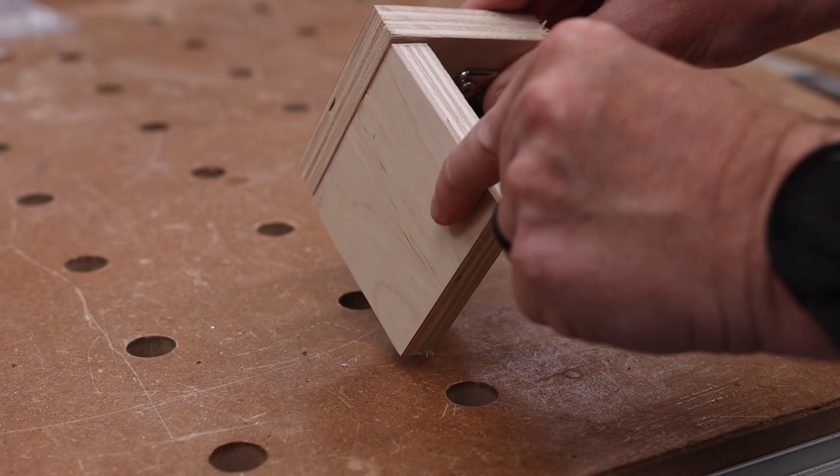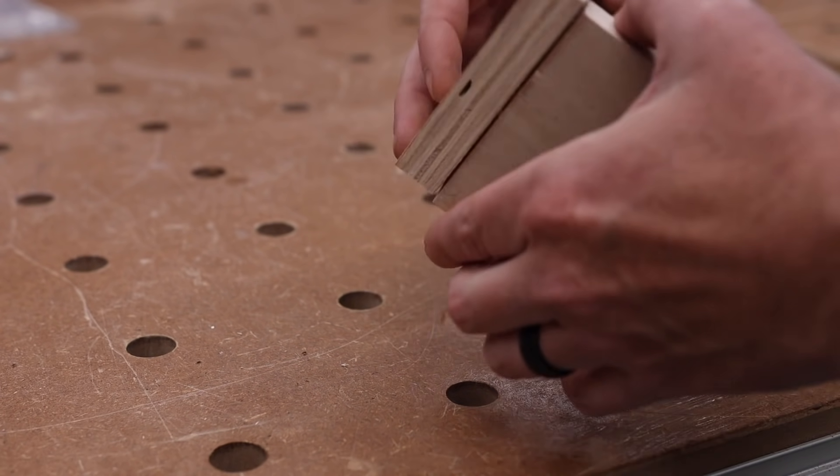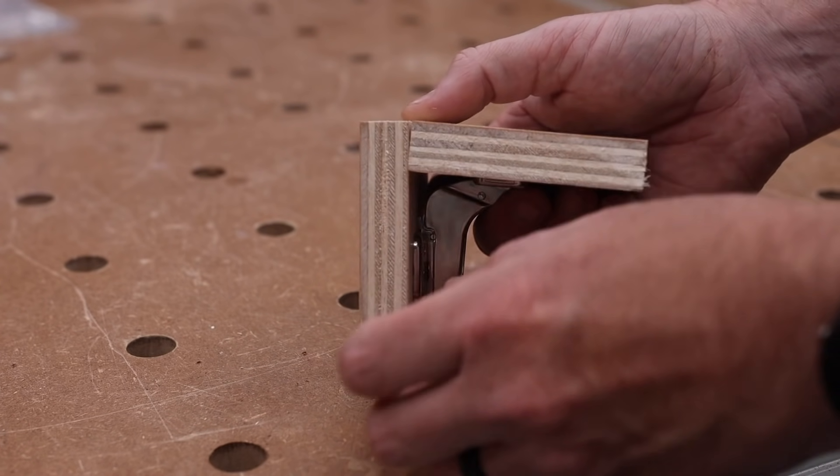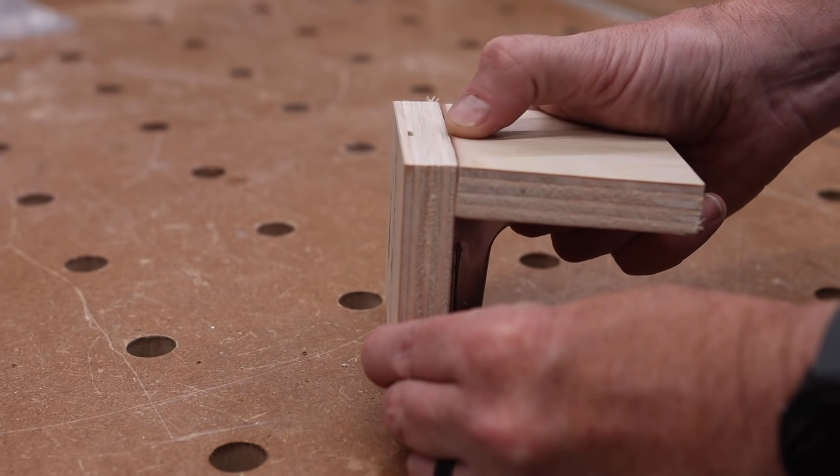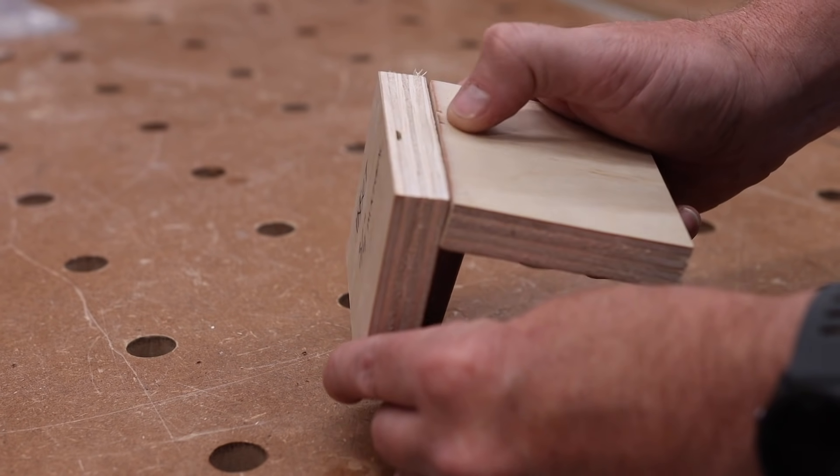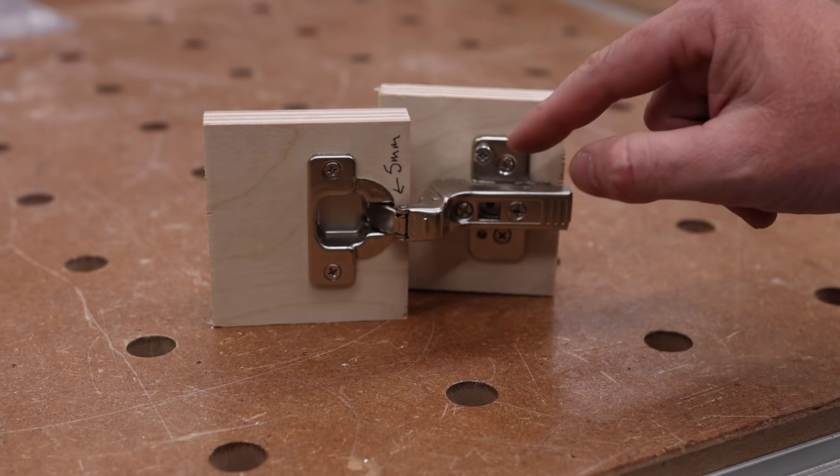So this is inset three quarter inch material. These inset hinges are very specific to the thickness of the material for the door. And this is just three quarter inch ply, which is a little bit under three quarters of an inch because it's actually millimeters. But if you look, it's perfectly flush. This is what we're looking for.